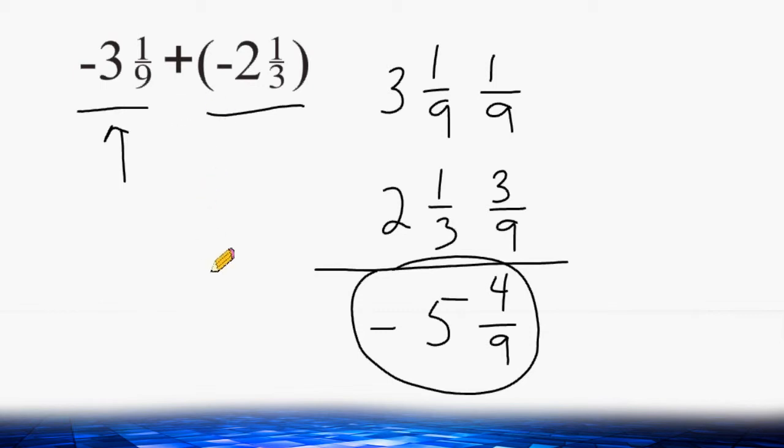This would put you at negative 5 and 4/9 below 0 altogether. So both of the movements were below 0. First you went this far below 0, and from that point you went this much further below 0, which would put you at a total distance of negative 5 and 4/9 below 0.